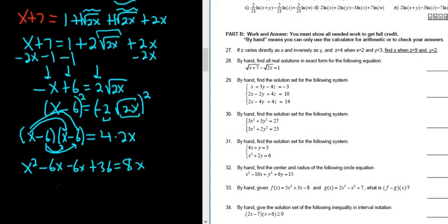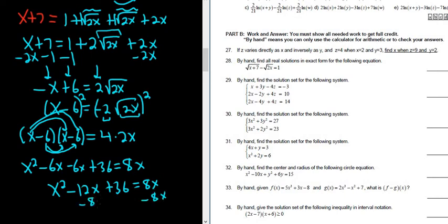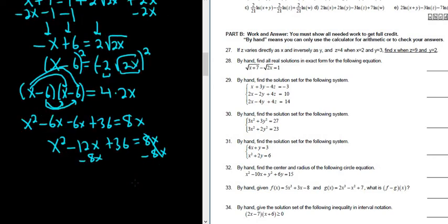So we have x squared minus 12x plus 36 equals 8x. Now subtract 8x and set everything equal to zero. We end up with x squared minus 20x plus 36 equals 0.